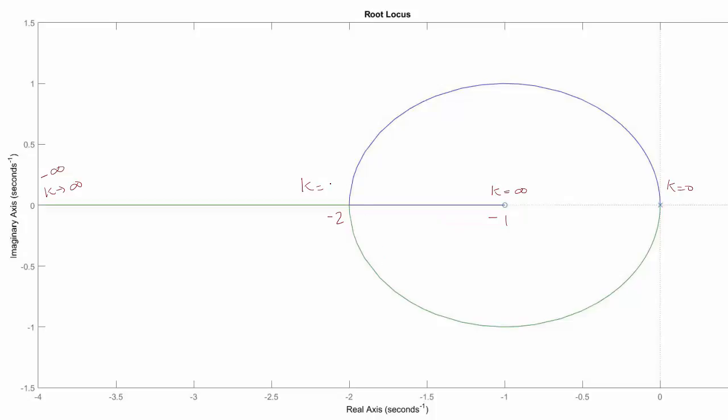So the first thing we're going to determine is the value of this k at negative 2. So the way we do that is k is equal to negative D(s) over N(s), which is equal to negative s squared over s plus 1, evaluated at s equal negative 2. And that yields 4.